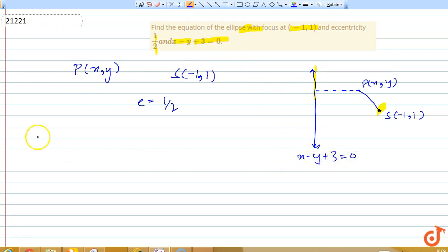So first the ellipse's basic condition will be SP = e × PM. The value of e is given as 1/2, so SP = 1/2 × PM. Squaring both sides we would have 4(SP)² = (PM)².